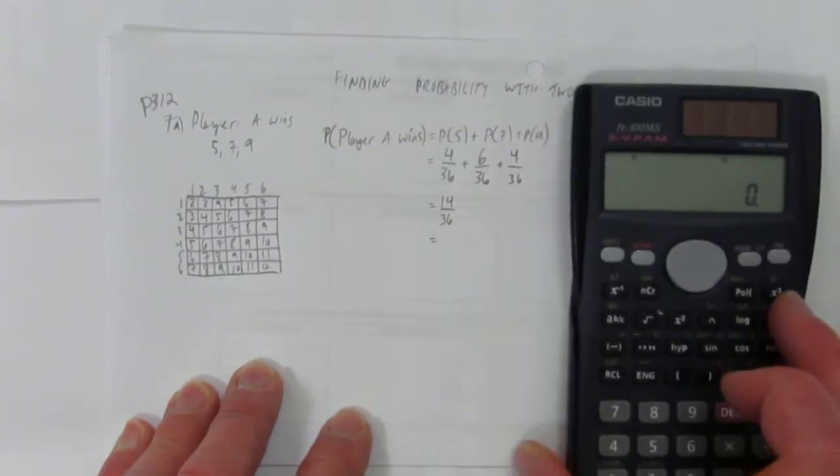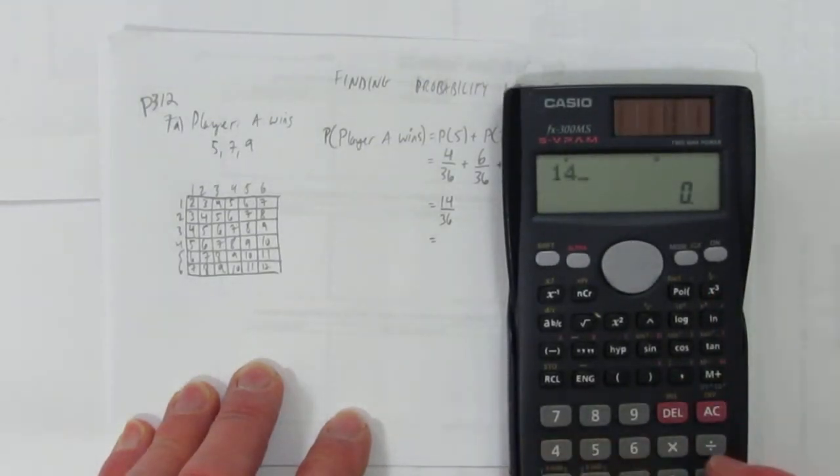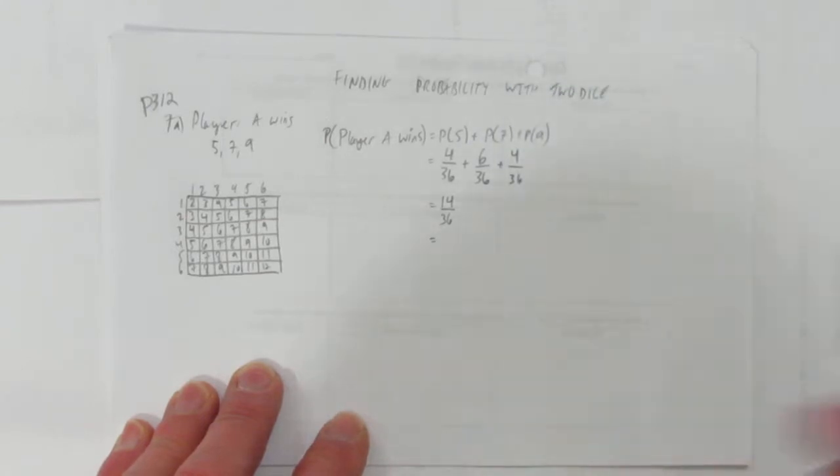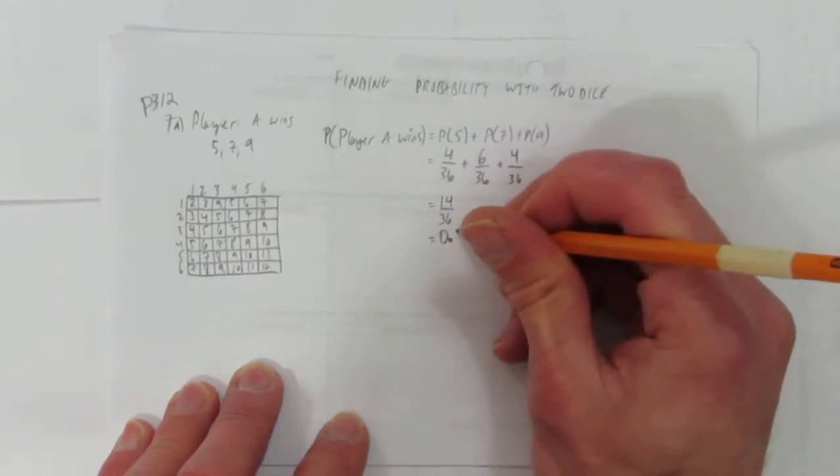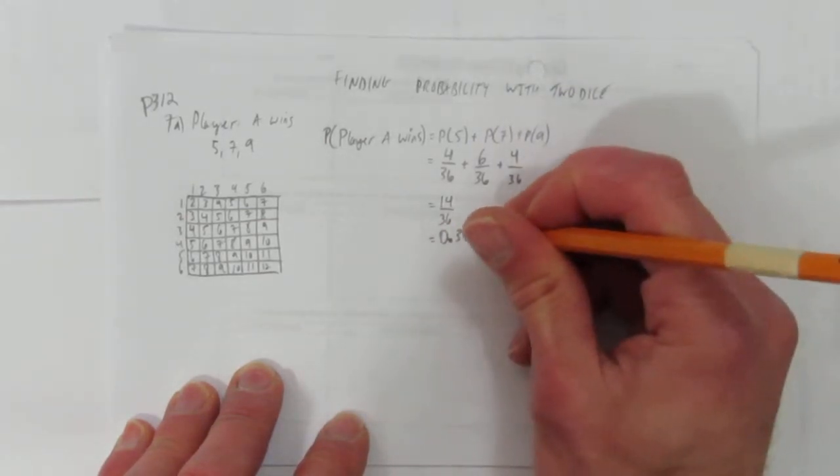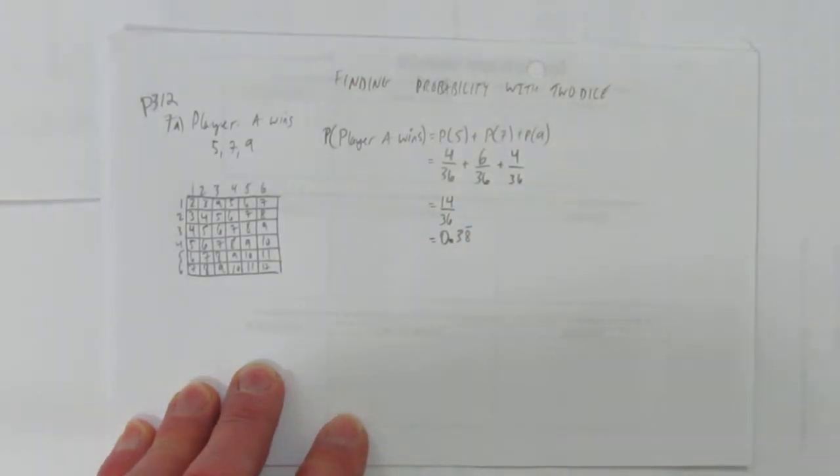Now let's calculate that. You can leave it as a fraction or convert it to a decimal just on your calculator. 0.38 repeating or approximately 39%. Now let's go back to the question.